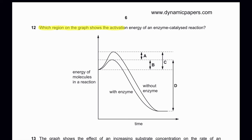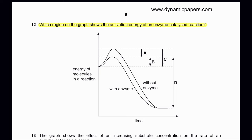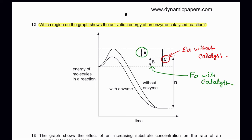Question 12: In which region on the graph is the activation energy of an enzyme-catalyzed reaction shown? An enzyme-catalyzed reaction has a lower activation energy barrier. Region C represents the activation barrier without a catalyst, and region B shows the lower activation energy with a catalyst. So B represents the activation energy with the catalyst, and B is the correct answer.